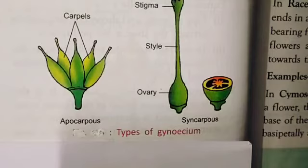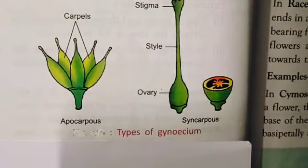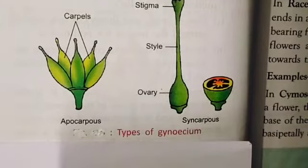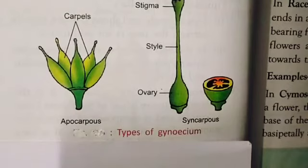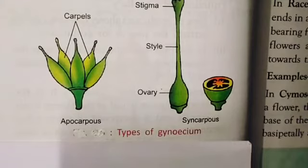In the monocarpellary condition, as the name itself suggests, a single carpel is present, which forms a single pistil. This type of gynoecium is called monocarpellary. Examples are peas and beans, where you can find the monocarpellary condition.